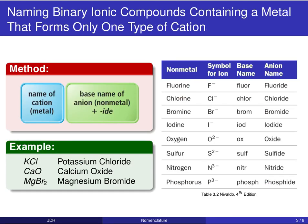Naming binary ionic compounds boils down to a relatively simple naming convention. However, we need to pay close attention to the characteristics of the metal. First, we'll look at metals that only form one type of cation — the metals in the first and second columns of the periodic table, and aluminum.